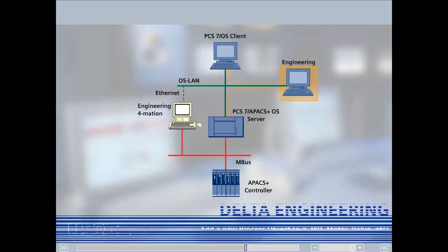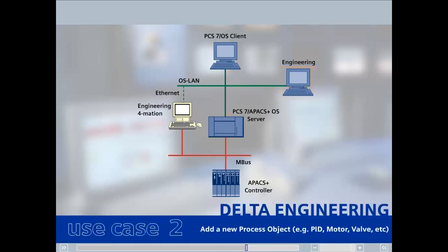In the second use case, we would like to show how the existing plant can be extended by a new measuring point using the remaining legacy engineering console. This change will be detected in the engineering system, and the changes are downloaded into the PCS7 Apex Plus OS server and the PCS7 OS client online.